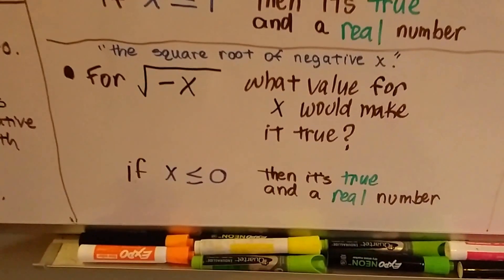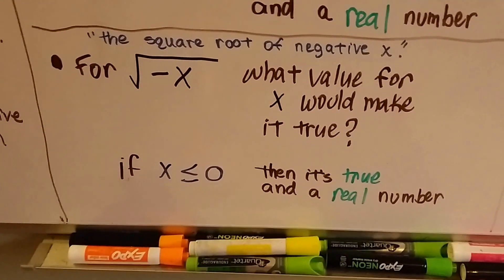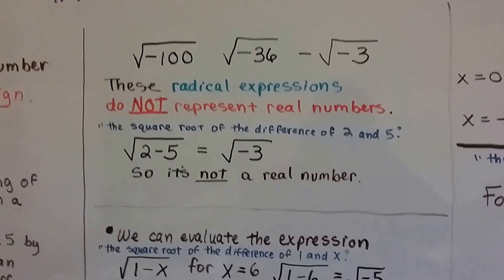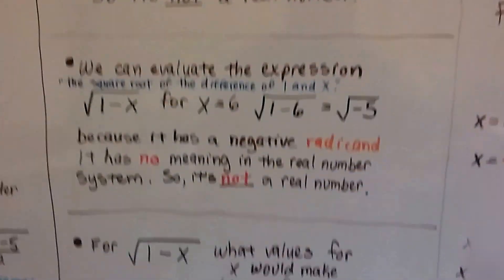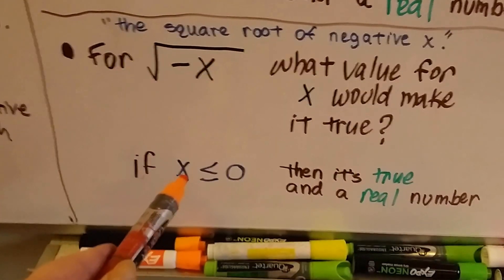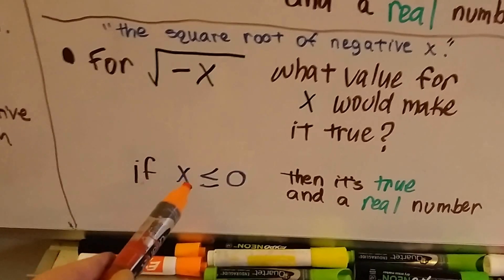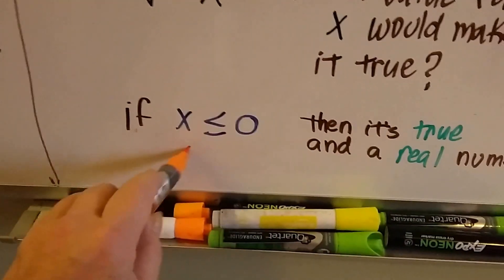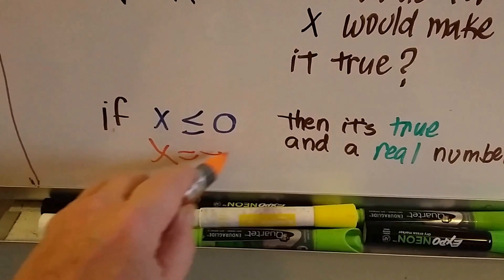Now remember, we've discussed this before. Don't let this confuse you. Just because it says negative x does not mean that it's like these guys. It's not the same thing. We've talked about this before. x, by itself, could be a negative or positive number. So what we're doing is, if x is a negative, if x equals negative 2, then that means we have a negative negative 2. See what I'm saying?